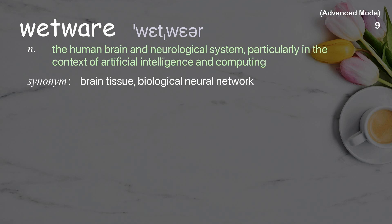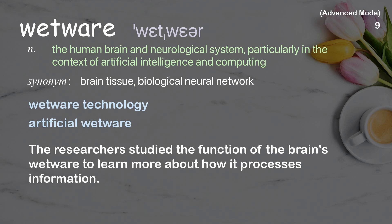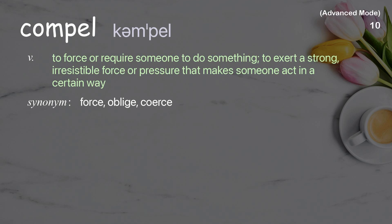Wetware. The human brain and neurological system, particularly in the context of artificial intelligence and computing. Examples: wetware technology, artificial wetware. The researchers studied the function of the brain's wetware to learn more about how it processes information.